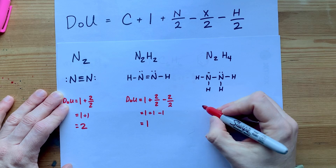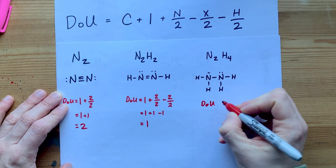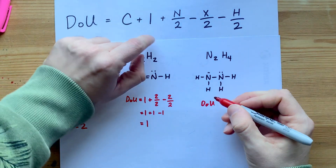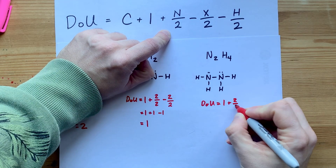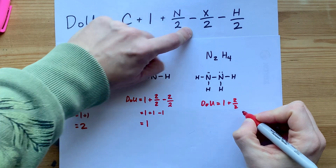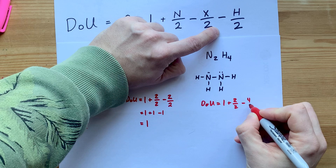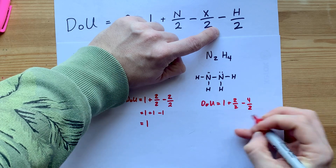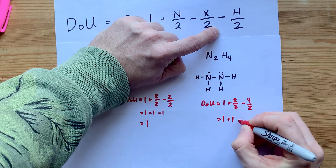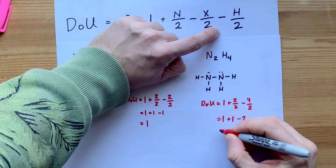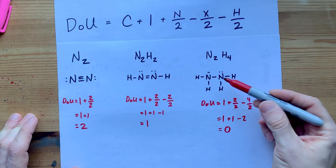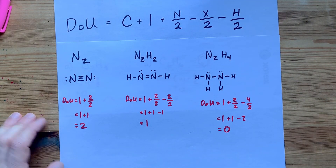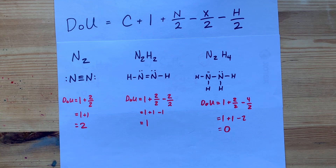Finally, for N2H4: no carbons, constant 1, 2 nitrogens, no halogens, and 4 hydrogens this time. So: 1 + 1 − 4/2 = 1 + 1 − 2 = 0. This has a degree of unsaturation of 0, because there are no double bonds, triple bonds, or rings. The formula works — it's a beautiful thing.